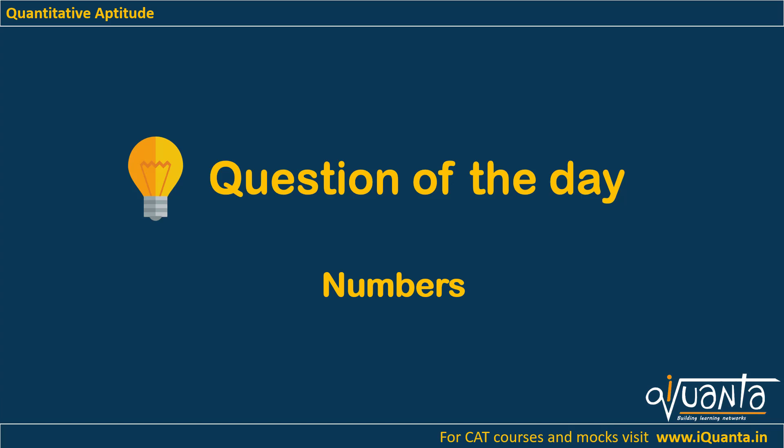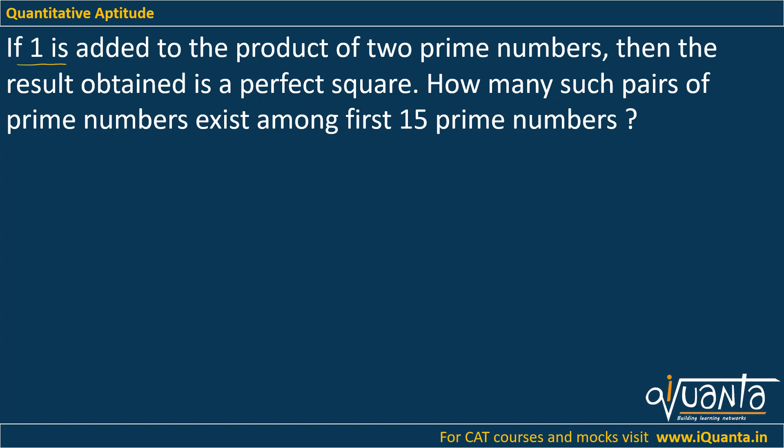Hello everyone. In this video we will be solving a question based upon numbers. The question is: if one is added to the product of two prime numbers, then the result obtained is a perfect square. How many such pairs of prime numbers exist among first 15 prime numbers?